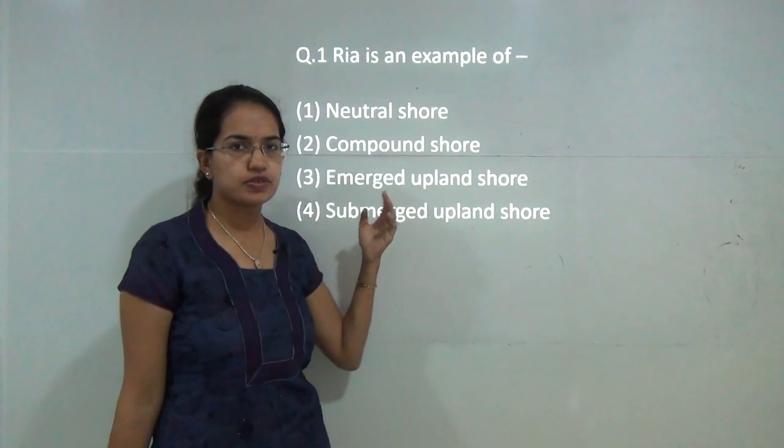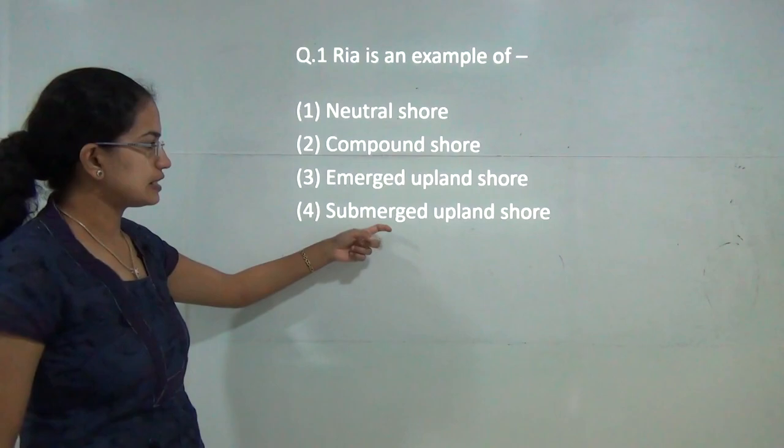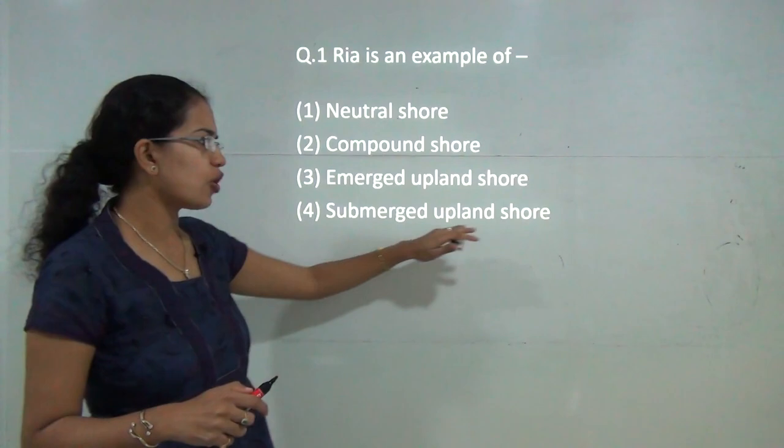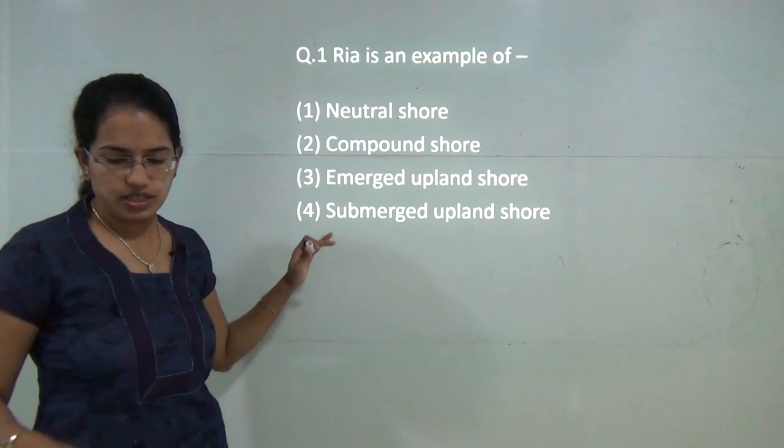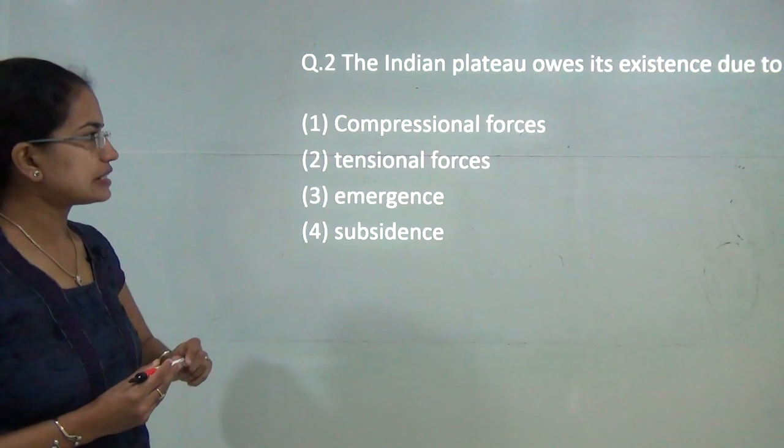Welcome, we will start with geography paper 3 January 2017, the first 25 questions. The first question here talks about Ria. Ria is a coastline which is an example of submerged upland coast shore and this is not affected by the glaciers, commonly found in northern European region. So 4 would be the correct answer here.